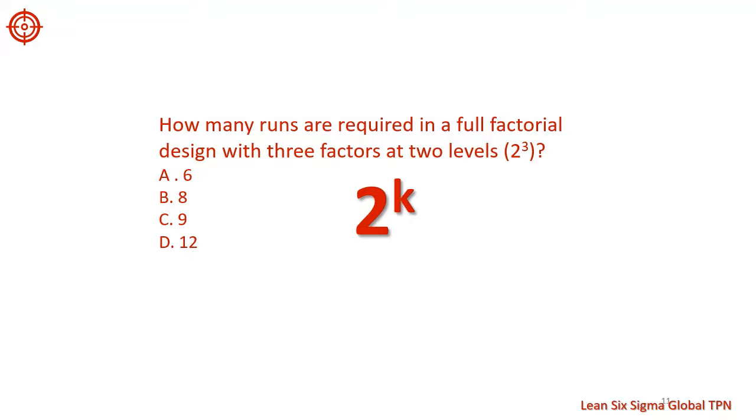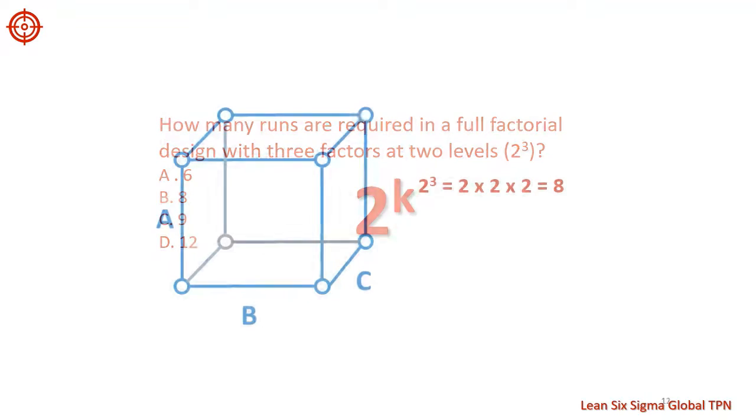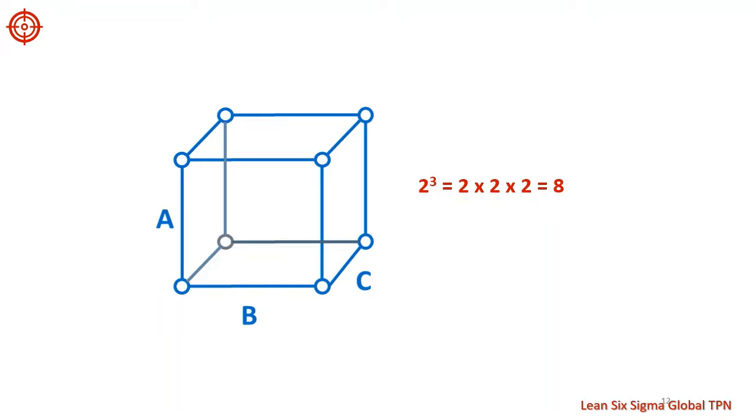So how many runs are required in a full factorial design with 3 factors at two levels? For three factors, each with two levels, the full factorial design contains 2 times 2 times 2. Notice that this design is a cube, where each corner of the cube represents the treatment combination.